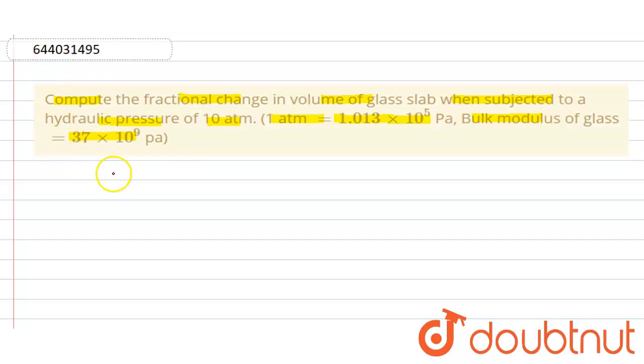Now in this question, it is given that 1 atm equals 1.013 × 10^5 Pascal, and we know that according to the question, we need the fractional change in volume of glass slab when subjected to hydraulic pressure.